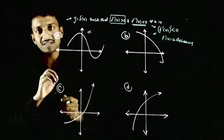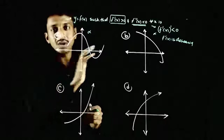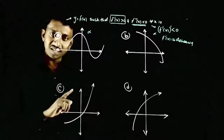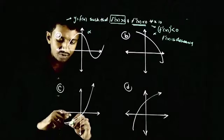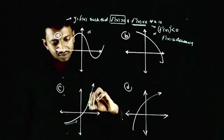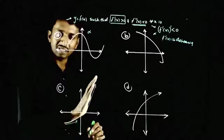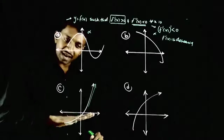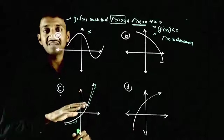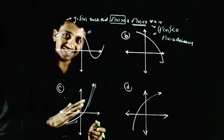Iska matlab, f dash of x — the slope of the tangent should slowly decrease as we go forward, as we go to the right side. Isme dekhi hai: starting mein slope of tangent is like this. As we go forward, the tangent is becoming steeper and steeper. Starting flat hai, as we go on the tangent is becoming steeper. Iska matlab tangent ka slope bad rahi hai, meaning f dash of x is increasing.